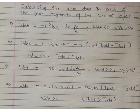For W_BC — adiabatic expansion — we use the heat capacity equation: W equals N times C_vm times delta T, where C_vm is the molar heat capacity at constant volume. The temperature change is T_cold minus T_hot, and W_BC is less than zero since T_cold is less than T_hot.